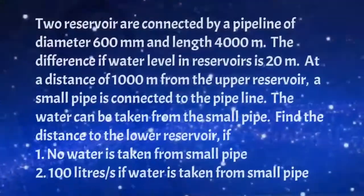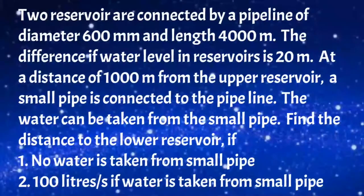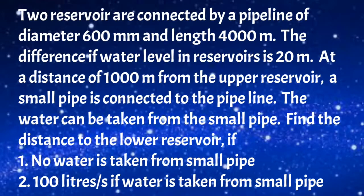The given problem: Two reservoirs are connected by a pipeline of diameter 600 mm and length 4000 m. The difference of water level in the reservoirs is 20 m. At a distance of 1000 m from the upper reservoir, a small pipe is connected. Find the discharge to the lower reservoir if no water is taken from the small pipe, and if 100 liters per second is taken. Take F = 0.005 and neglect minor losses.